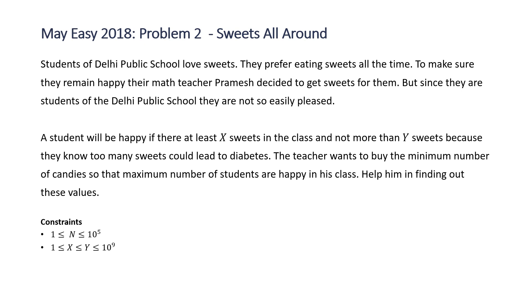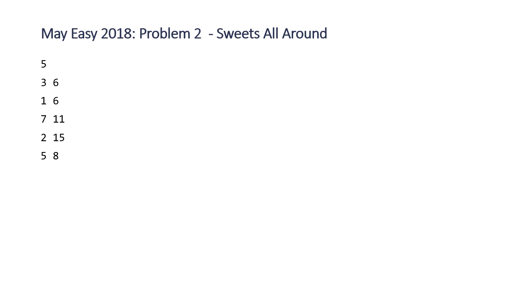Note that the number of students n is going to be between 1 and 10 to the 5, and x and y — the ranges of the number of candies for each student that will make them happy — are going to be between 1 and 10 to the power of 9. Let's take a look at the example that HackerEarth provided. The first number 5 is the number of students, and the next 10 numbers, 2 per line, represent the interval x and y — x being the minimum and y being the maximum number of candies in the classroom that will make each student happy.